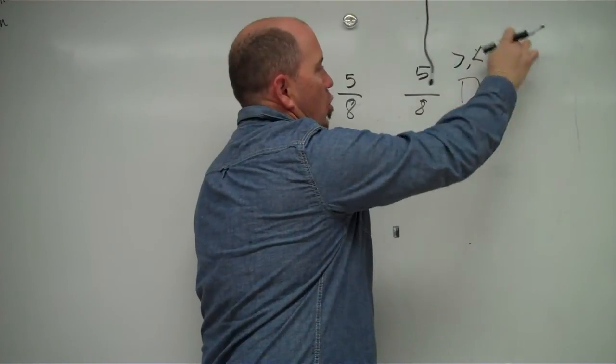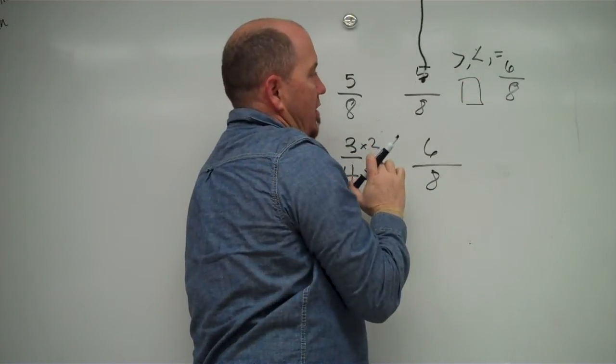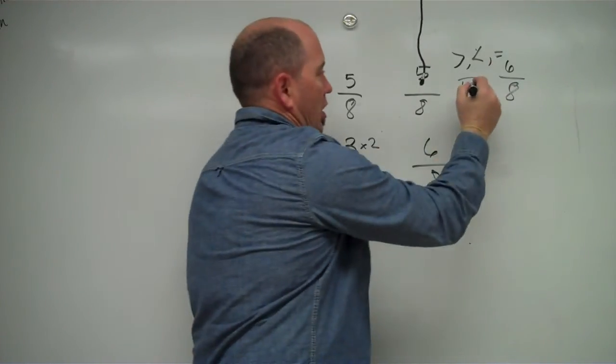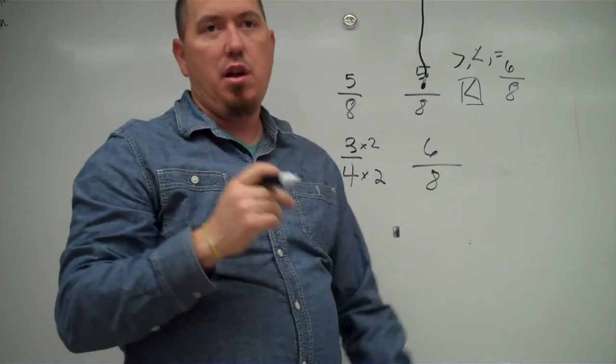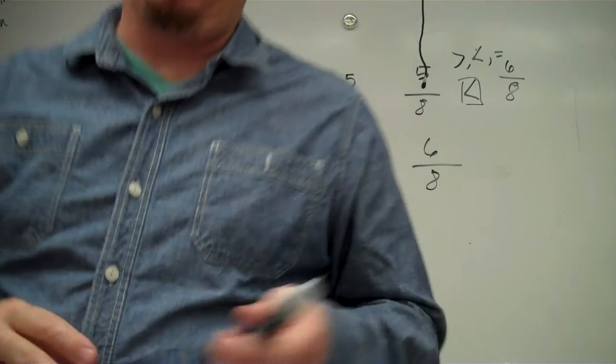So this just means that I have more of the denominator, right? So I have, in this case, I have 5 out of the 8. In this case, I have 6 out of the 8. Well, 6 is more than 5, so the larger piece is 6 eighths. Okay? So again, that's comparing fractions using the common denominator approach. Okay? Thanks.